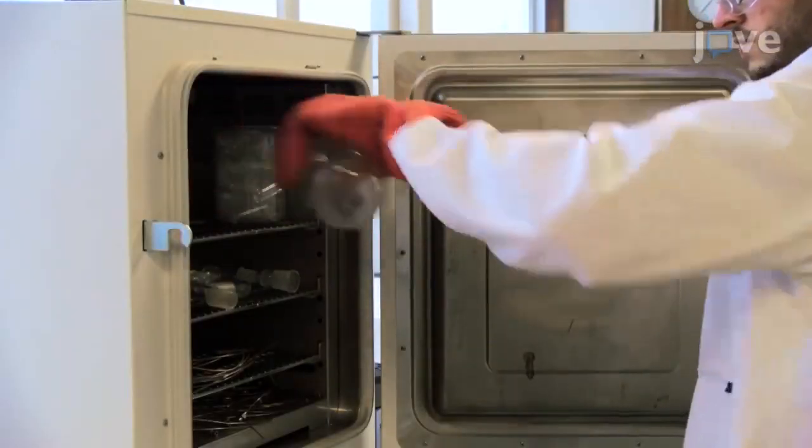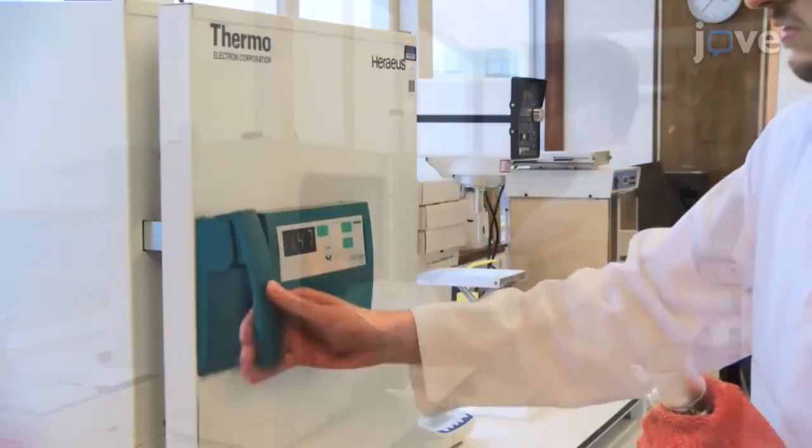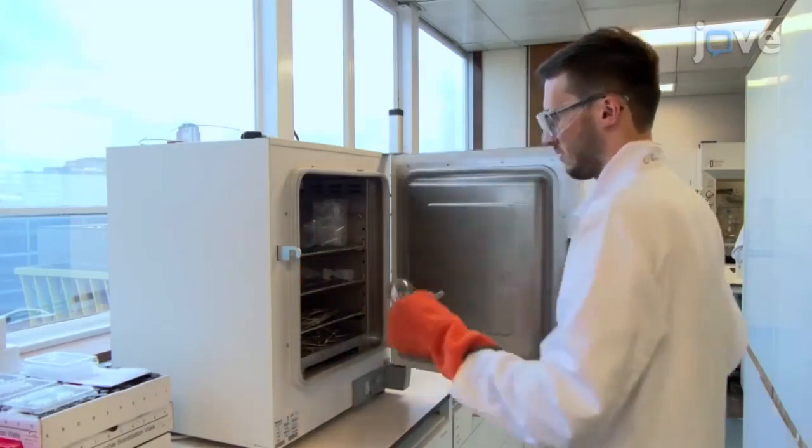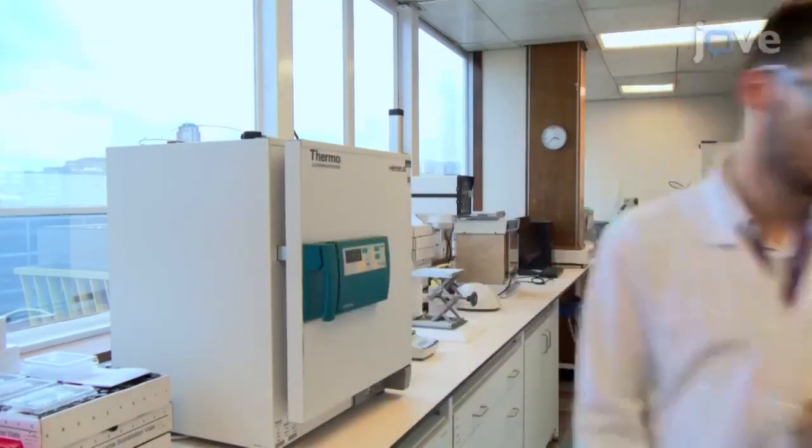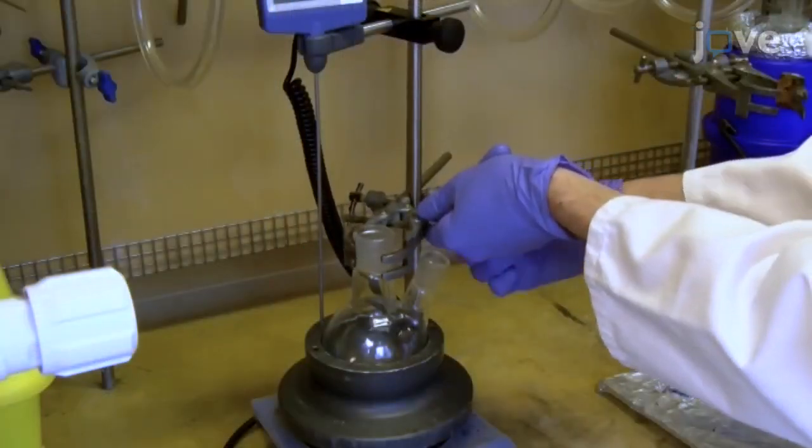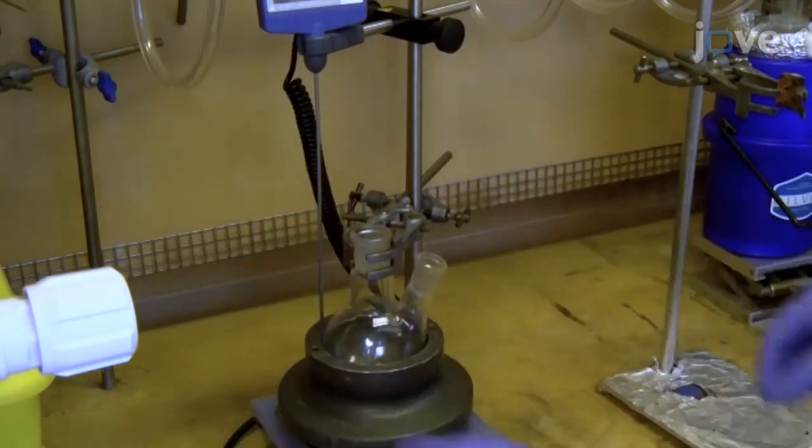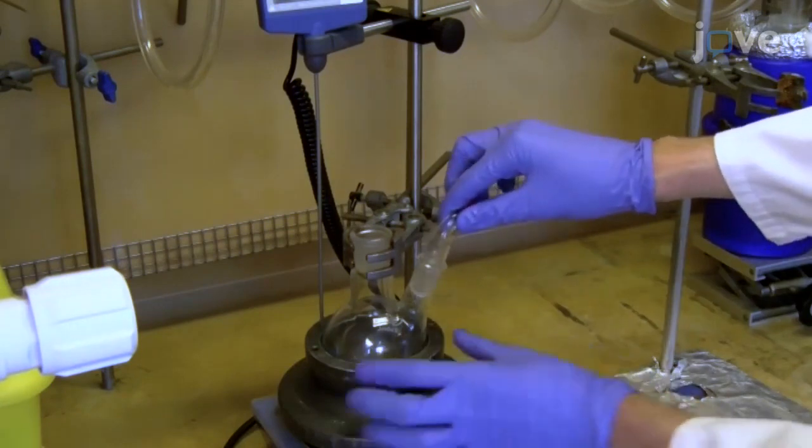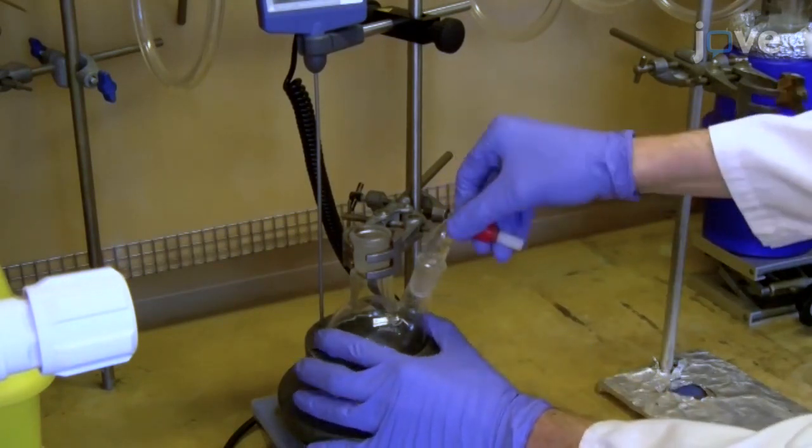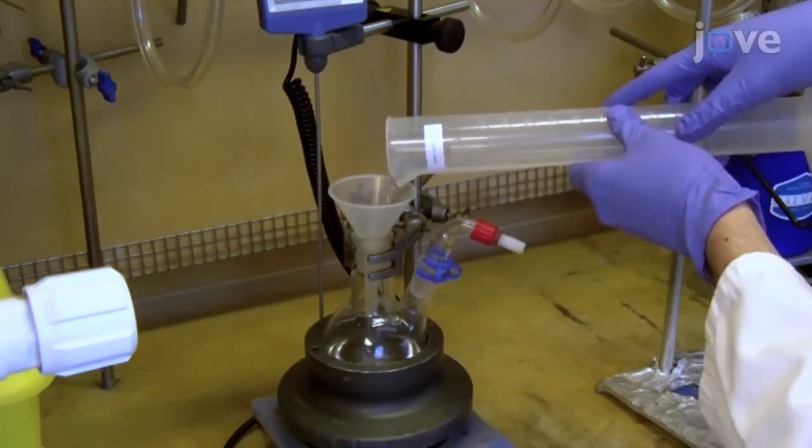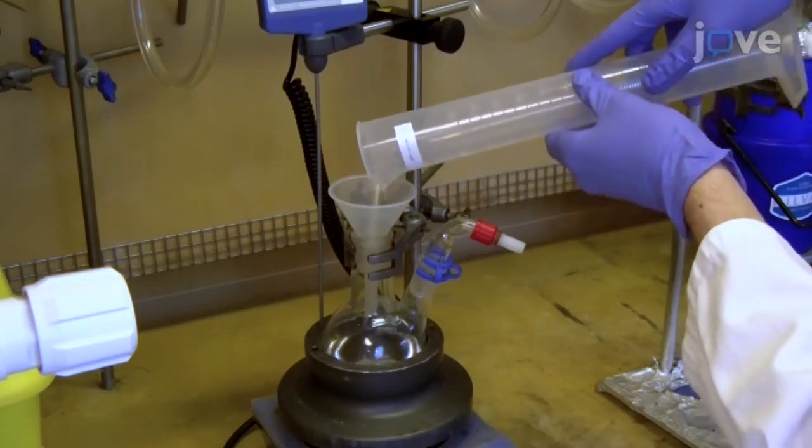To begin, transfer all glassware and stir bars dried in a 150 degree Celsius oven overnight to the bench. Clamp the two-neck 250 milliliter round bottom flask equipped with a stir bar on a stand over a stir plate and secure an airtight tap on the small neck. Add 100 milliliters of epsilon-caprolactone to the flask.